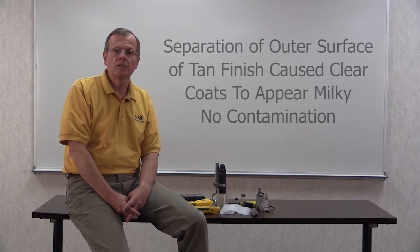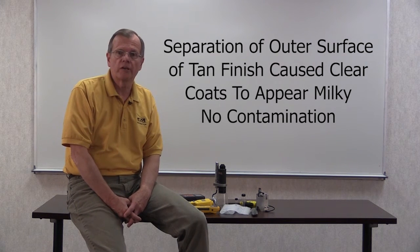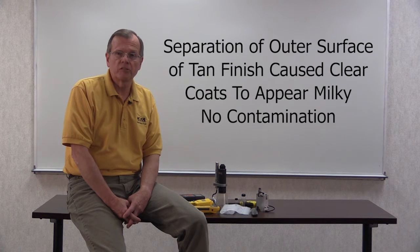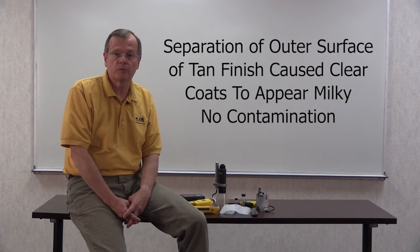In this case, the microscopic analysis confirmed that the problem was occurring in the outer surface of the tan coat. This separation caused the clear coat to have a milky appearance. Contamination between coats was not visible.